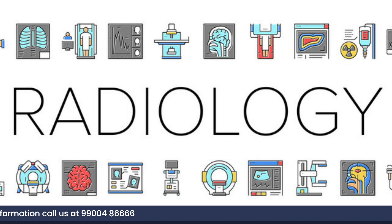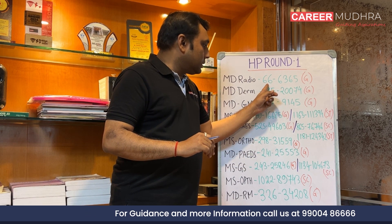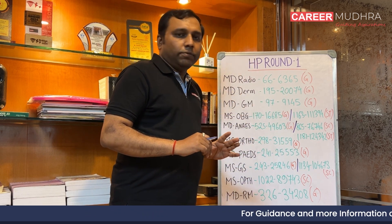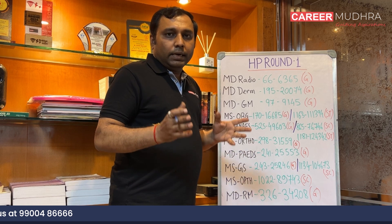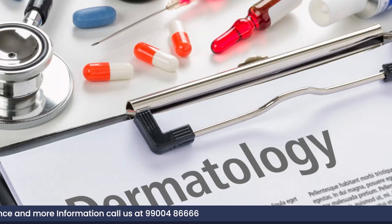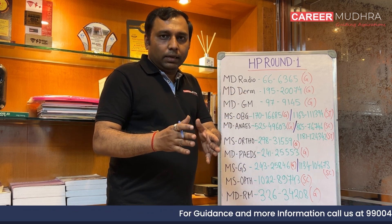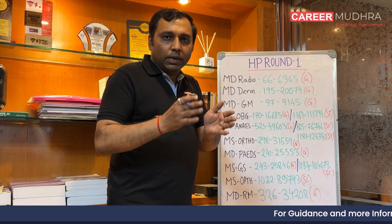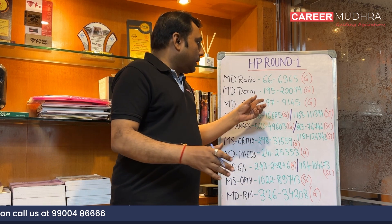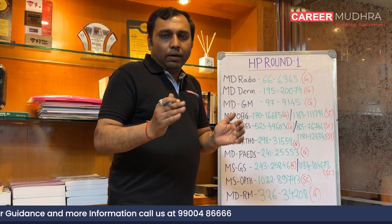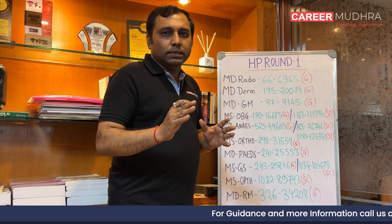For MD Radiology in management quota, they have only general category seats. The Himachal Pradesh cutoff is state rank 66, which converts to all-India rank 6,365. Naturally, radiology is a premium branch so the cutoff is high. For MD Dermatology, again they have only general category seats. The seats are divided into different categories — domicile category for Himachal students, in-service students, and NRI students — so not all branches will have reserve category SC/ST seats, but many branches do.